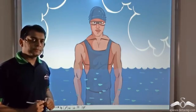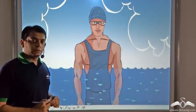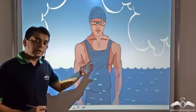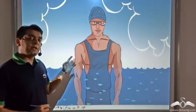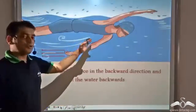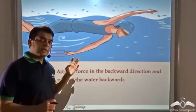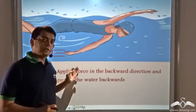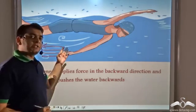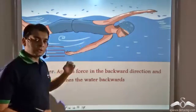How does a swimmer swim? That is, how does a swimmer move forward in water? We know that for the swimmer to move forward, a force needs to be applied on the swimmer in the forward direction. But the swimmer pushes the water backwards — the swimmer exerts a force on the water in the backward direction. So, what pushes the swimmer forward? Who or what is exerting the forward force on the swimmer?